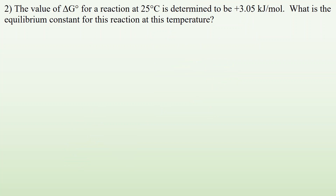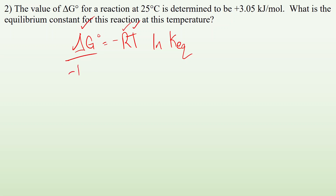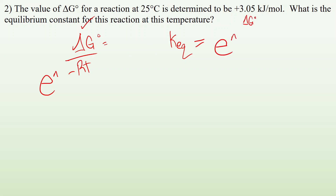Number two: if the delta G0 of a reaction at 25°C is determined to be positive 305 kilojoules per mole, what is the equilibrium constant for this reaction at this temperature? We use delta G0 equals negative RT times the natural log of KEQ. We're given delta G0 and temperature; R is a constant, so we're solving for KEQ. Rearranging: divide both sides by negative RT to isolate the natural log, then raise both sides to base E, giving KEQ equals E to the negative delta G0 over RT.